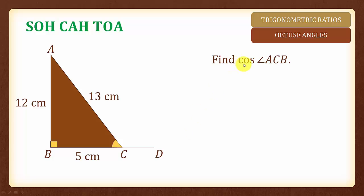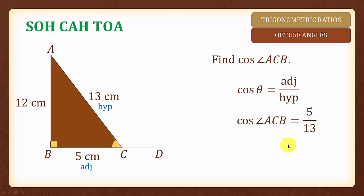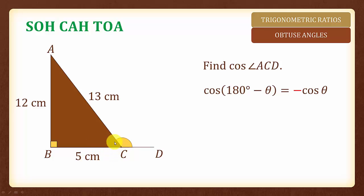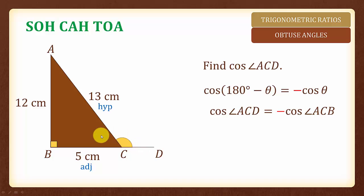To find the trigonometric ratio of cosine ACB, we will use adjacent over hypotenuse. The adjacent is 5 and the hypotenuse is 13, so cosine ACB equals 5 over 13. Next, we are asked to find cosine of the obtuse angle ACB. Since cosine 180 degree minus theta is equal to negative cosine theta, we can find the trigonometric ratio of this obtuse angle by using the negative of the trigonometric ratio of the acute angle. Since cosine of the acute angle ACB is equal to 5 over 13, cosine of the obtuse angle ACB will be negative 5 over 13.